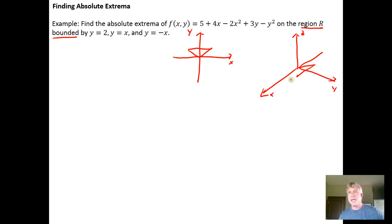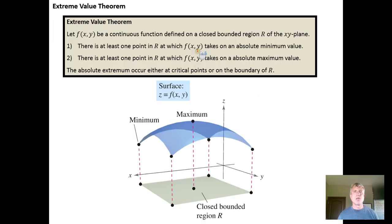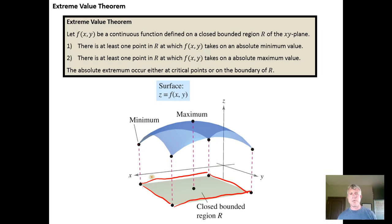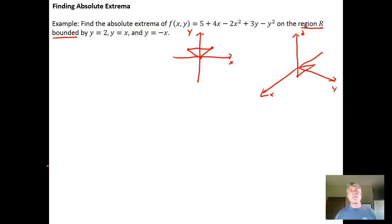We're going to need to know the intersection points of these boundary lines — those are going to be candidates. When looking for global extrema over a closed bounded region, the extrema can occur at critical points, at the corners of our bounded region, and along the traces formed by our bounded region in the xy-plane. It causes traces on the surface we're working with, and we have to take all of those into account.